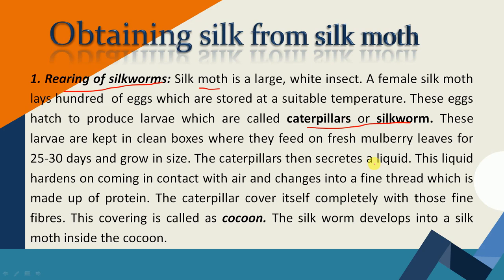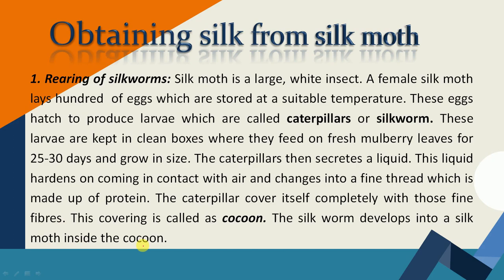The caterpillars can secrete a liquid. जब वो air के contact में आते हैं तो वो hard होना शुरू हो जाते हैं और बहुत fine threads बनते हैं — पतले पतले धागों में — which are made up of protein. The caterpillar covers itself completely with these fine fibers, और इस covering को कहते हैं cocoon.